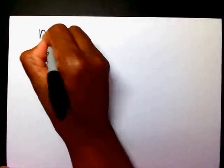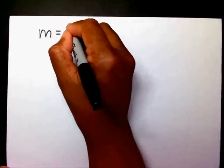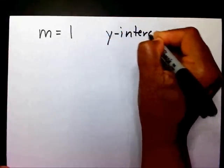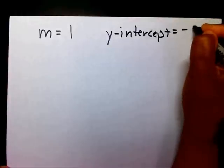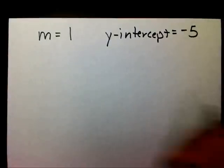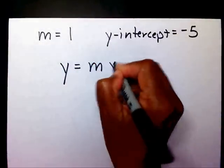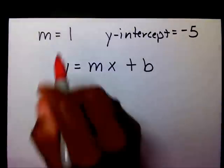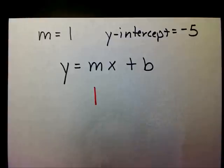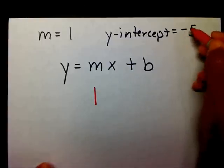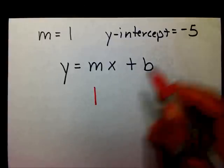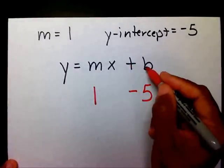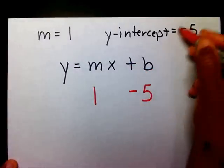Last one. If m equals 1 and the y-intercept equals negative 5, then I know that y equals mx plus b. I can substitute 1 in for m and negative 5 in for b. Since this is a negative 5, I'm going to write minus 5 here instead of plus 5.